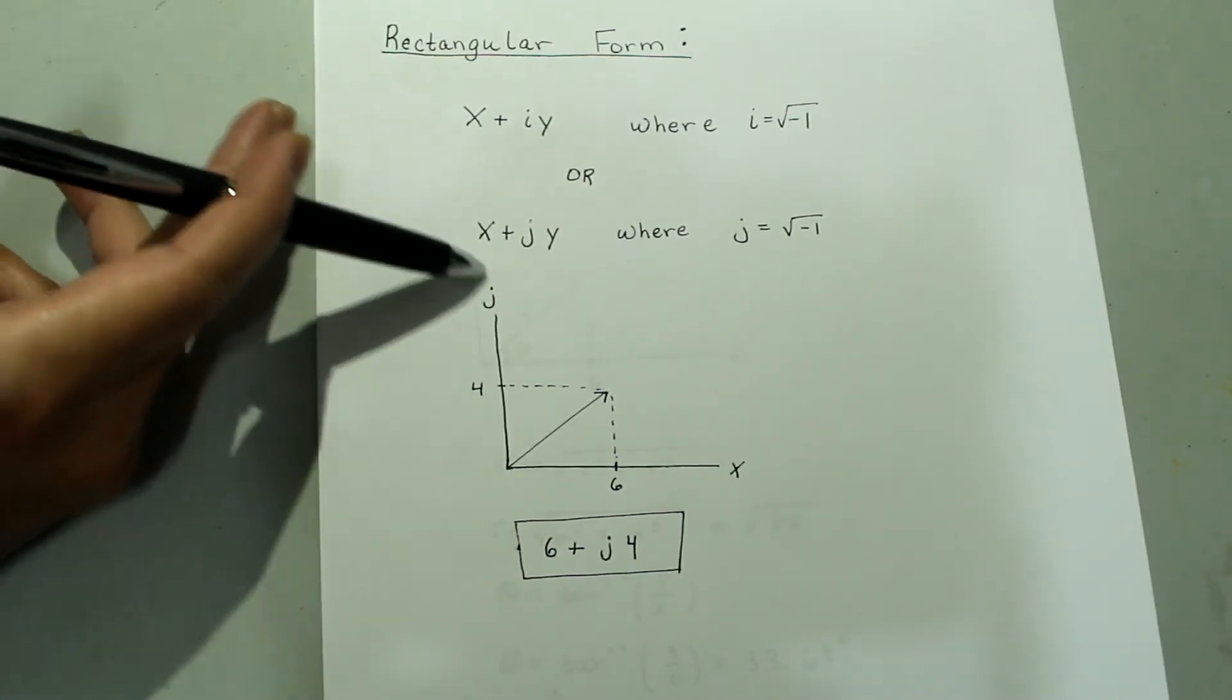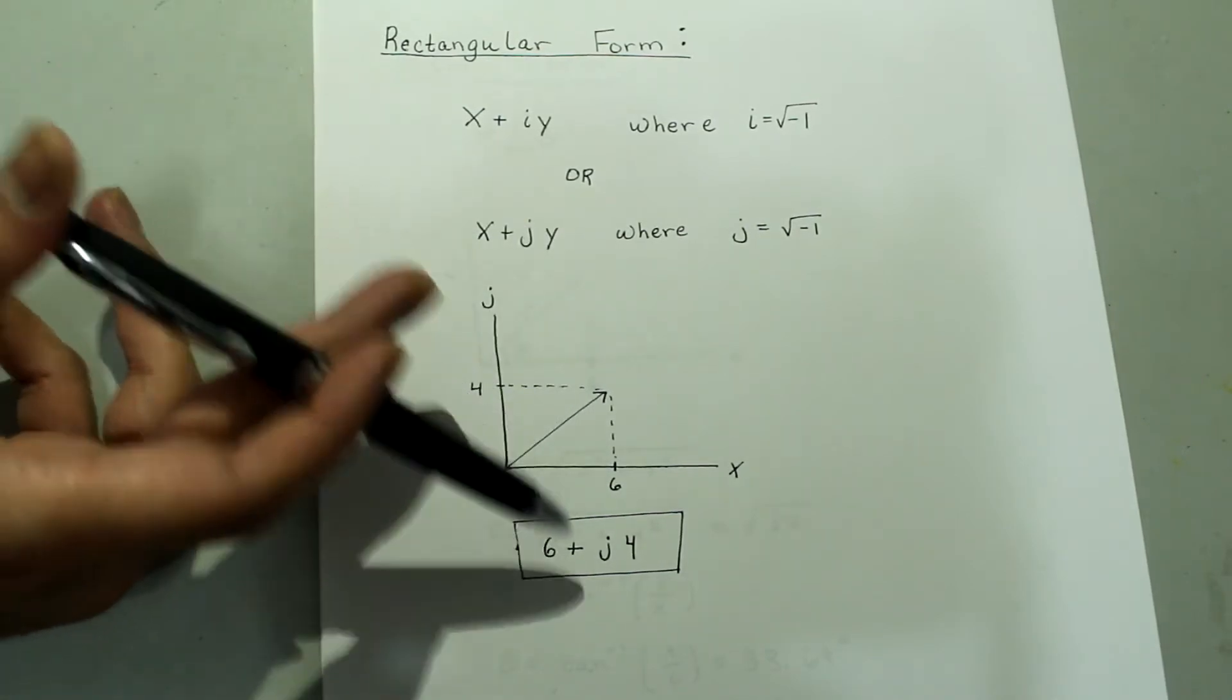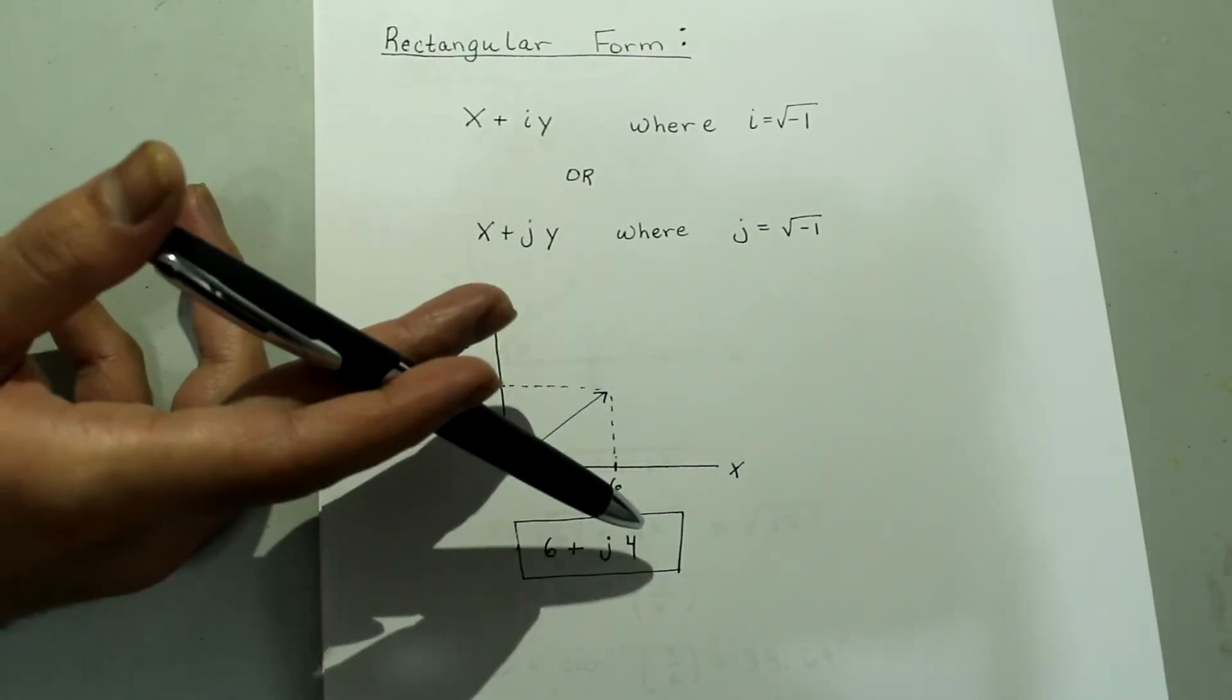So this would be written as 6 plus j4. Or if you were to think about it in this term, it's x plus jy. So your x is 6, your y is 4.